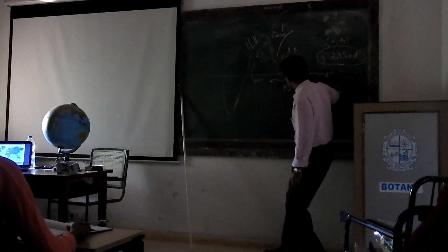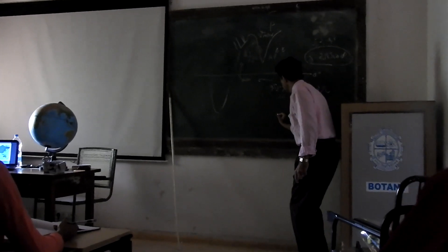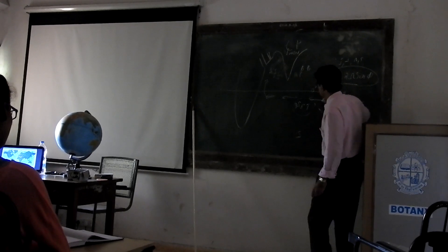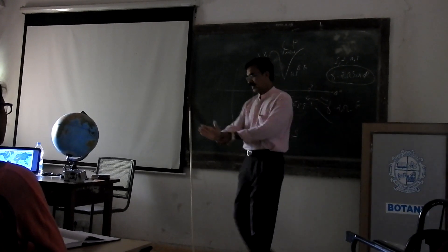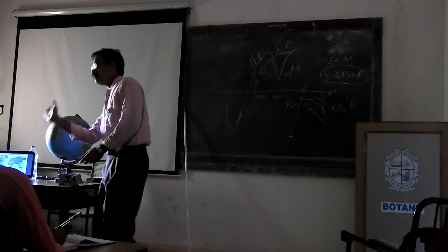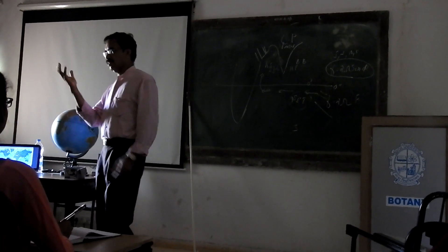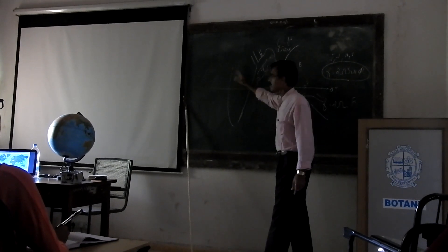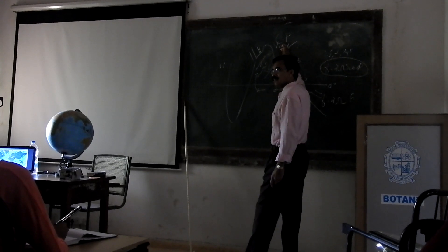So if you have the equator and the cross-equatorial flow going south-east, south means this direction and east means this direction. And if you cross the equator, when you cross the equator and especially reach around 10 to 15 degrees north, it is being turned to the right by Coriolis force — by the effect of the rotation of the Earth. And then it becomes southwest.